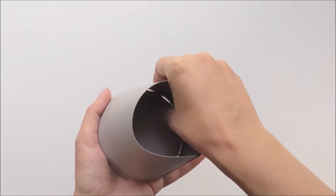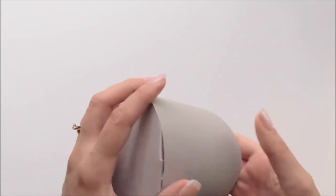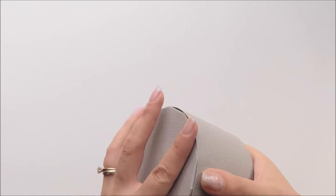And then you're going to go and press each tab to the inside one by one until the glue holds, going all the way around the circle.